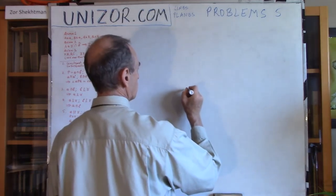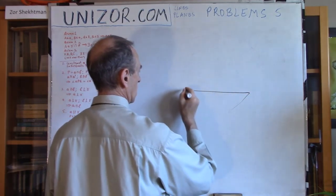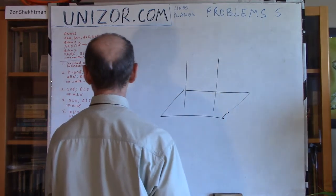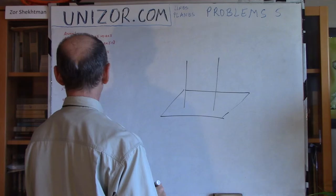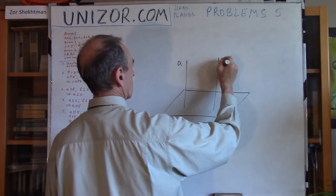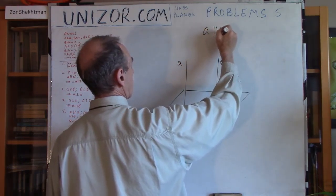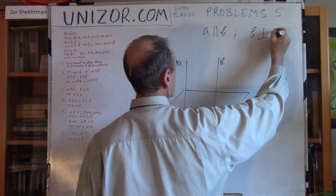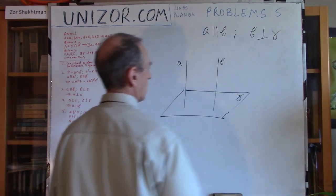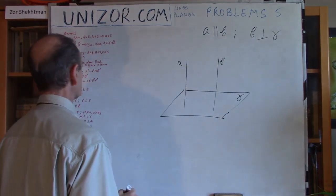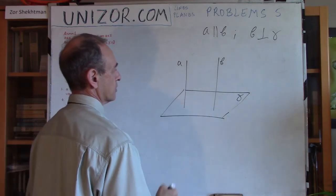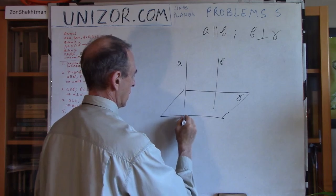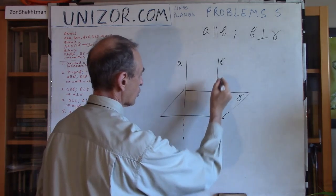Next, I have a plane and two lines A and B. I know that they are parallel to each other, and I also know that line B is perpendicular to plane gamma. I have to prove that the second line A is also perpendicular to gamma. So: one line is perpendicular to a plane and another is parallel to that perpendicular — I need to show the second is also perpendicular.